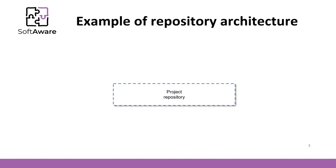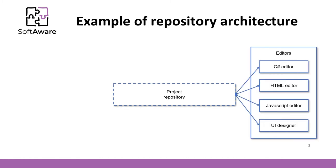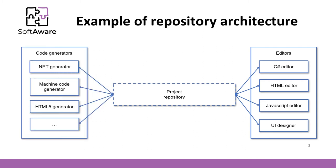First, what comes to mind is the code editor. Within Visual Studio, you can edit C#, HTML, and JavaScript code. Also, we can use a UI Designer to design the user interface of our software graphically. In order to compile or build code for a specific platform, the IDE needs to use code generators. The IDE uses a .NET code generator to generate .NET applications. If necessary, machine code could be built for different processors. There is also a possibility to generate code dedicated for running within the browser environment.